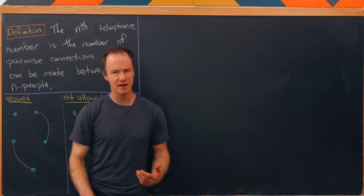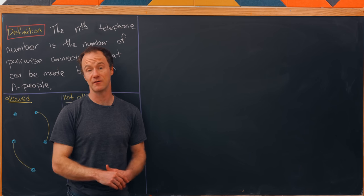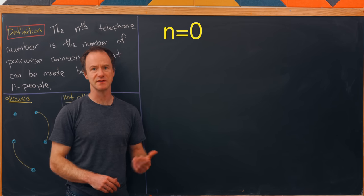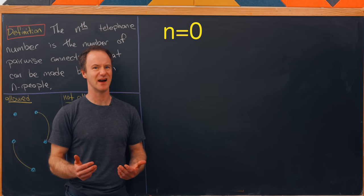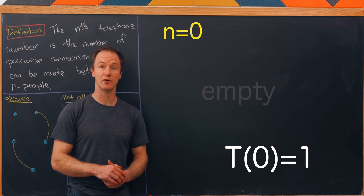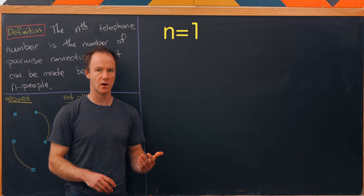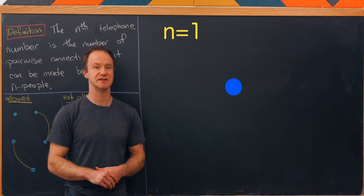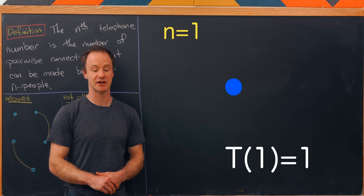We can draw some pictures to find the first couple of telephone numbers. For n equals zero, there are no people, and we take that to be the empty connection space, so the zeroth telephone number is one. For n equals one, the first telephone number is also one — there are no connections that can be made, it's again like an empty connection.